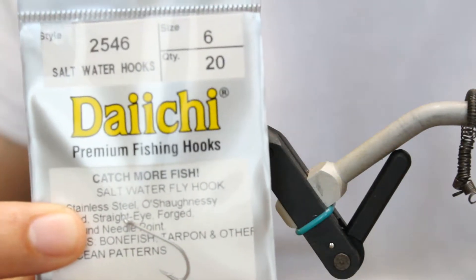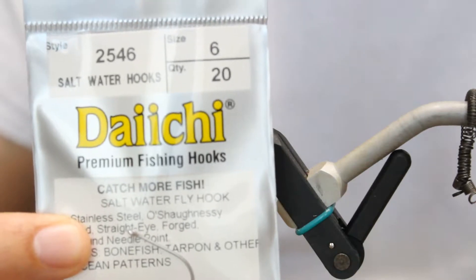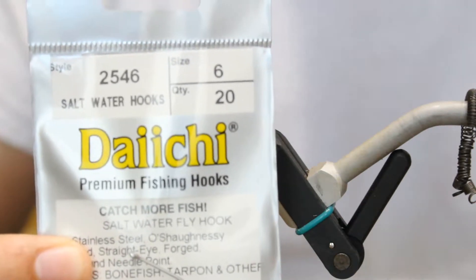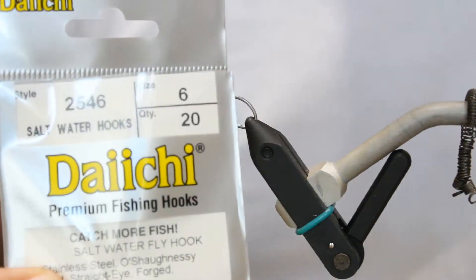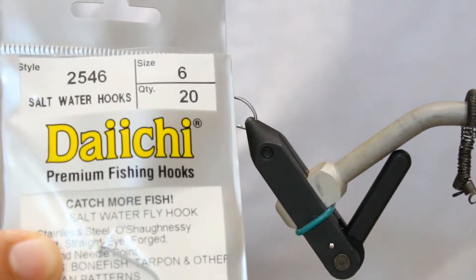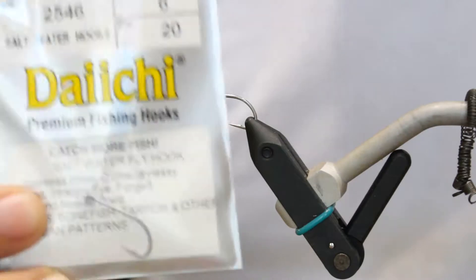So if you're going somewhere like Hawaii, the Bahamas, you may be able to tie something a little bit bigger for them. But if you're going to Belize, size 6 is great. Again, I'm using the Daiichi 2546. It's my favorite hook for pretty much everything.